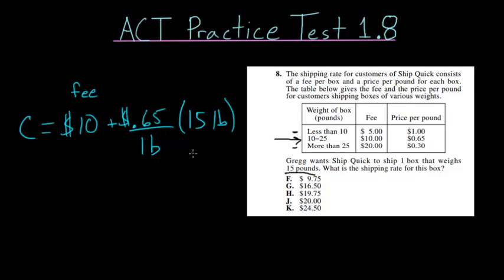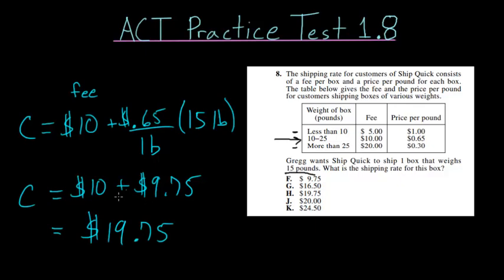So our cost is now this $10 plus 65 cents times 15, which once you use your calculator you'll see is $9.75. Adding these together, we get a total cost of $19.75, which is choice H.